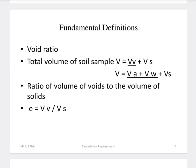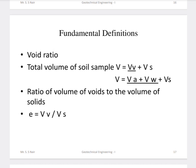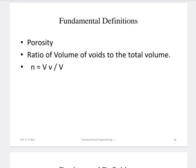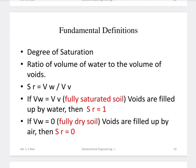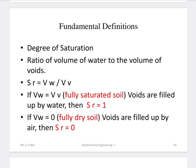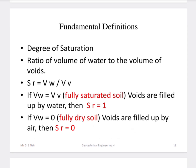The total volume of soil equals volume of void plus volume of solid. Volume of void is the volume of air plus volume of water. Void ratio is the ratio of volume of void to the volume of solid. Porosity is the ratio of volume of void to the total volume. Degree of saturation is the ratio of volume of water to the volume of void. In a fully saturated state, volume of void equals volume of water, so degree of saturation equals 1. In a fully dry state, volume of water is zero, so degree of saturation equals 0.